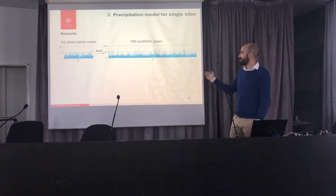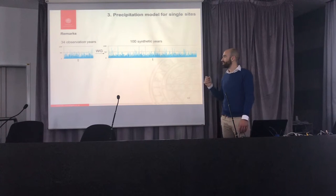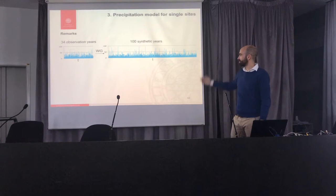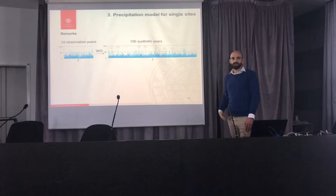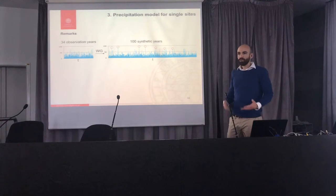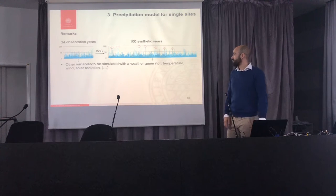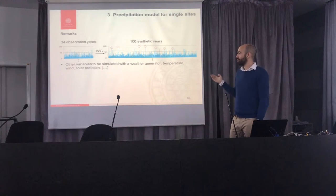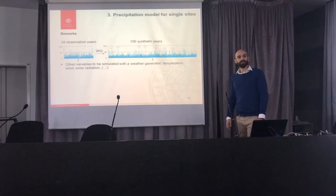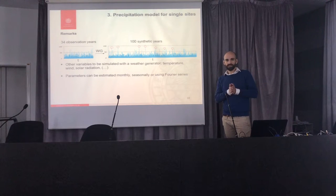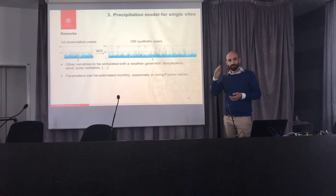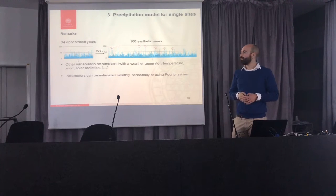Just to make it tangible: one example is from the Doubs catchment in the southern French Alps, with 34 observation years. With 100 synthetic years, you get a couple of unobserved extreme events — which is what we're interested in for physically based flood frequency analysis. You can also simulate other variables like temperature, wind, and solar radiation. You can use Markov parameters to capture the seasonal cycle, since transition probabilities change over the seasons — either estimated seasonally or with a Fourier model fitted to the annual cycle.